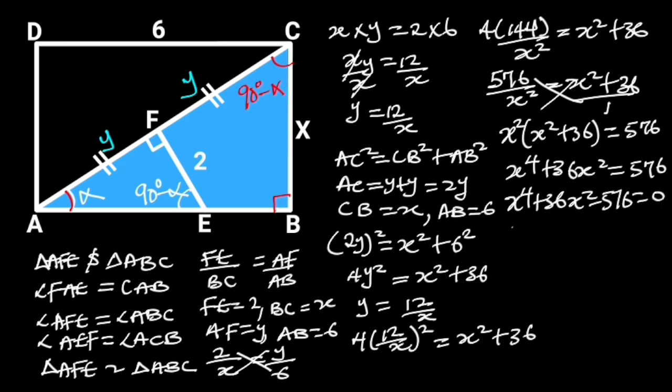And this is a bi-quadratic equation. To factorize this equation, first we are going to transform the bi-quadratic equation into a quadratic equation. To do so, let's take P to be X squared. And the quadratic equation will be P squared plus 36 P minus 576 is equal to 0.